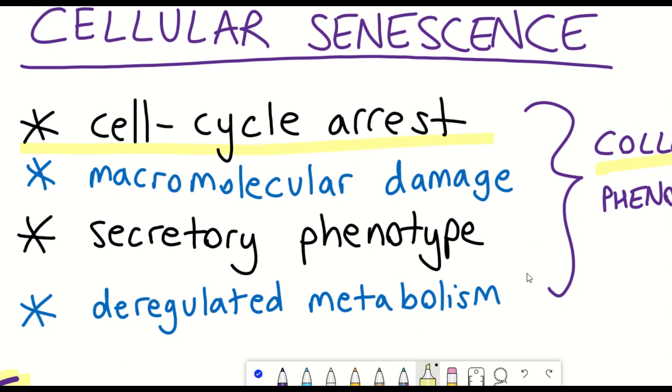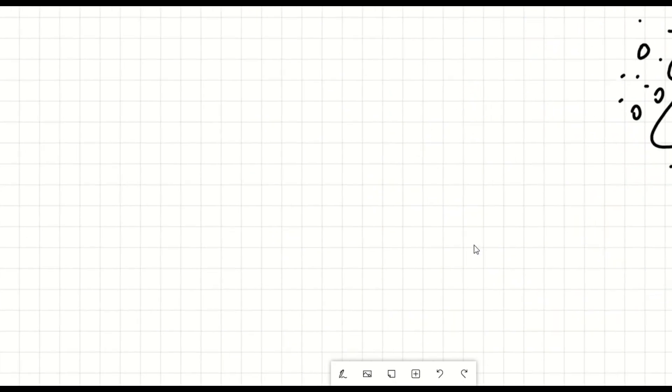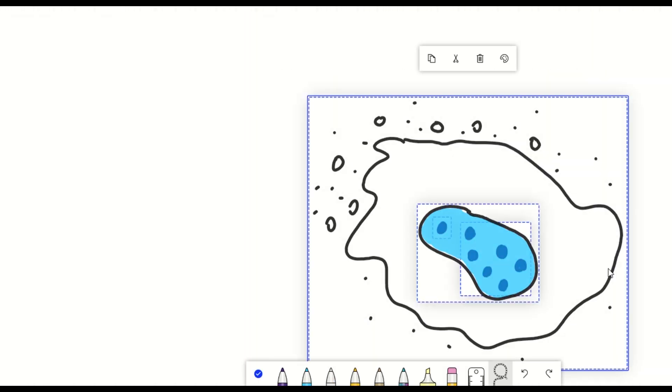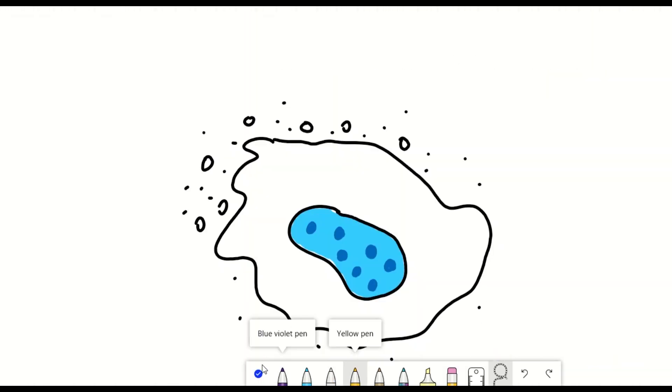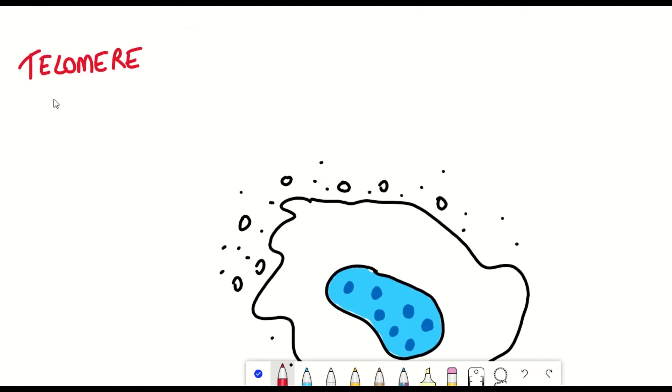So you might now be wondering, what actually causes a cell to become senescent, and why do we see these four different characteristics and not other characteristics? Well, it turns out there are lots of different ways that you can induce a cell to become senescent.